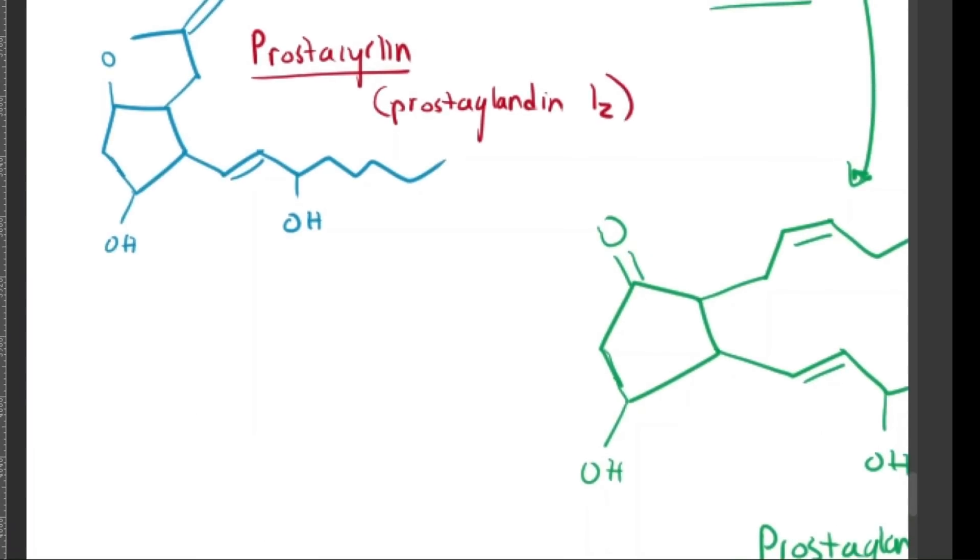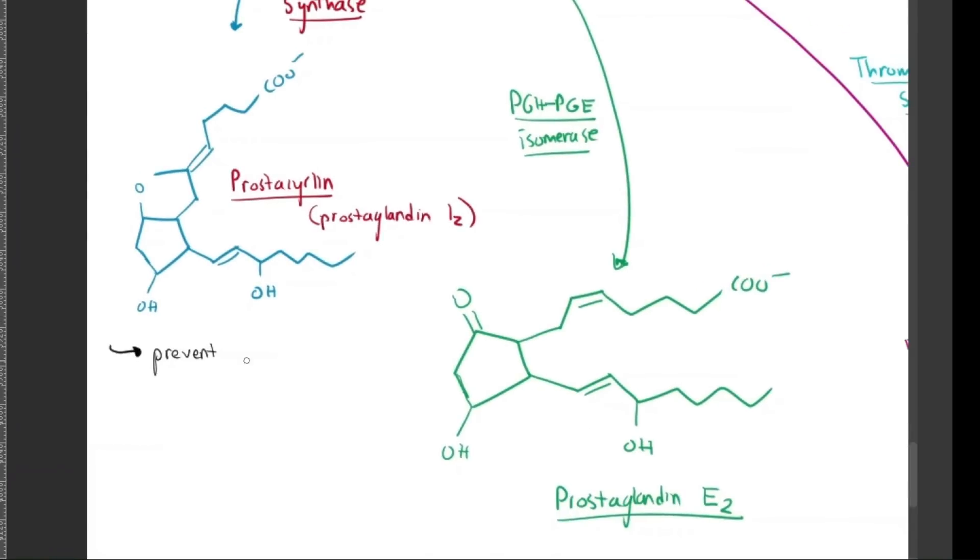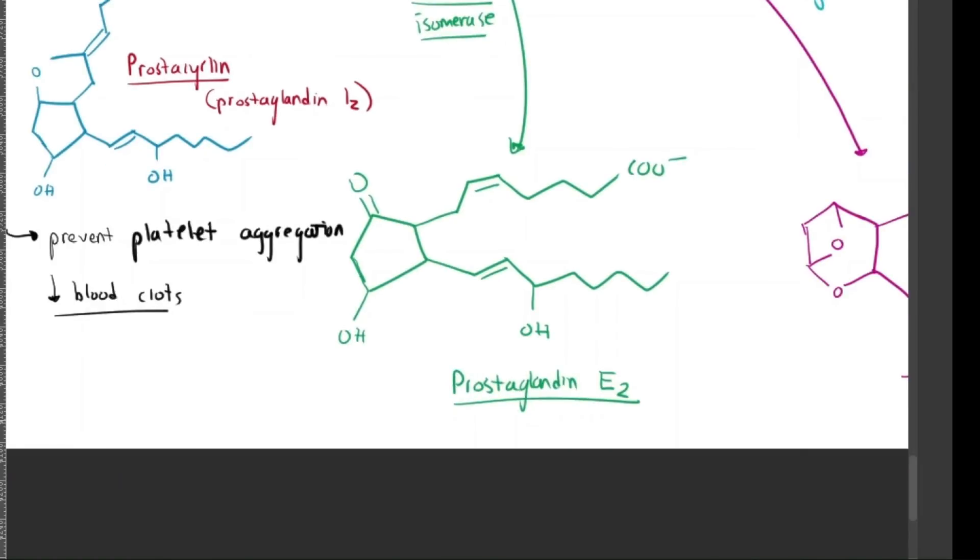Now I'm going to go more in detail about prostacyclin or prostaglandin I2. Prostacyclin is considered the blood clot preventer. Essentially, what it does is that it inhibits platelet aggregation, or preventing blood clots from forming, dilates blood vessels, improving blood flow, and reduces inflammation in endothelial cells. It can act in this antagonistic mechanism to thromboxane.